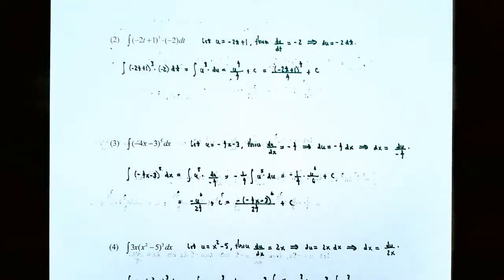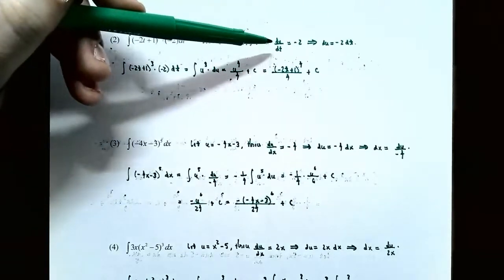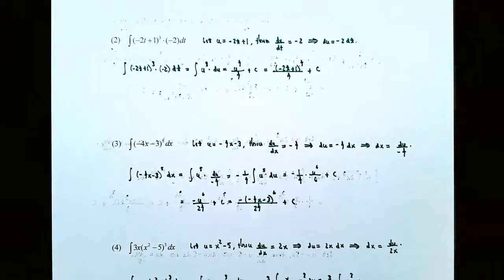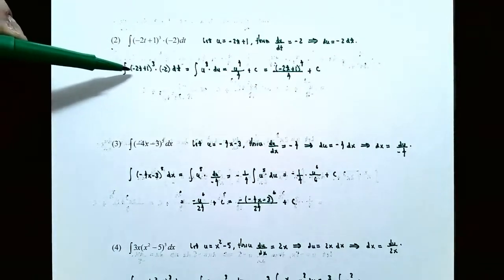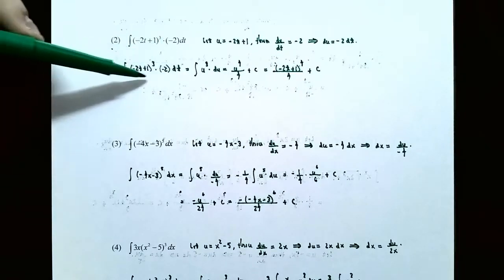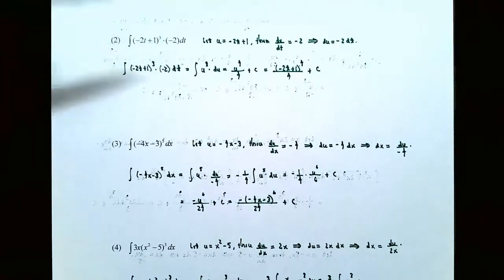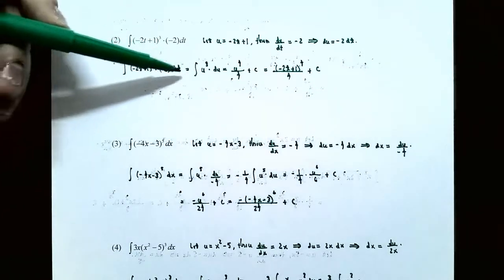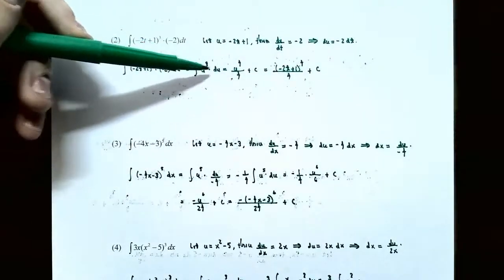Just like the last problem, we want to replace negative 2 dt in terms of du. Multiply both sides of the equation by dt to get du equals negative 2 times dt. So let's go back to the original integral and apply the substitution method. The integral of negative 2t plus 1 to the third power times negative 2 dt: replacing negative 2t plus 1 with u gives the integral of u to the third power, and replacing negative 2 dt with du gives the integral of u cubed du.